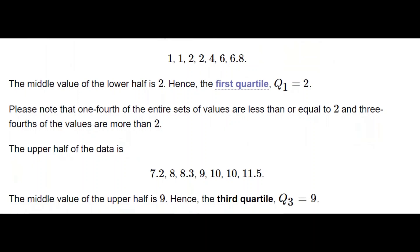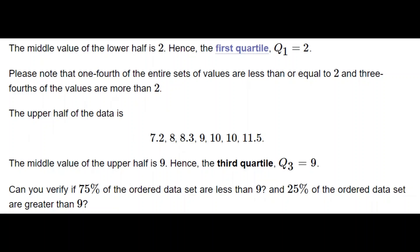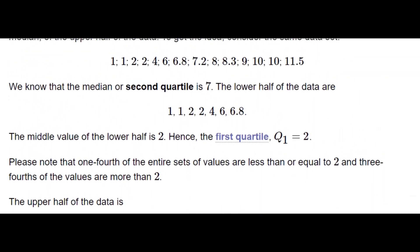You can verify that among the whole data set, 75% of values are less than 9 and 25% are greater than 9. The numbers greater than 9 are 10, 10, and 11.5 — that's 3 numbers, which is 25% of the 14 data points. The numbers below 9 from 1 to 8.3 are 10 numbers, making 75%.